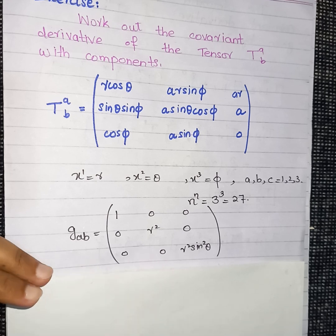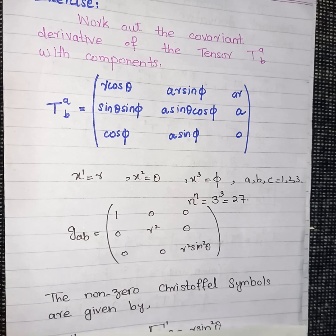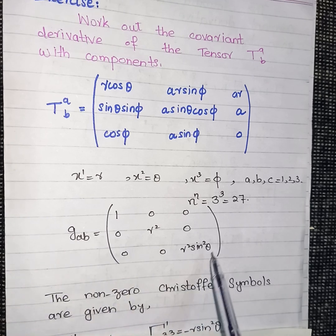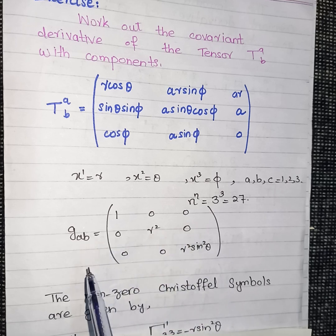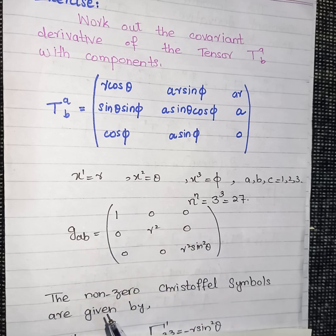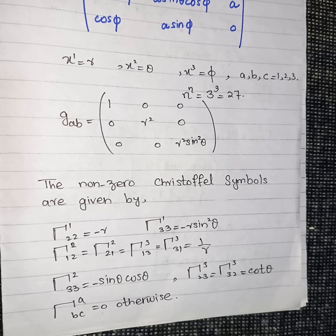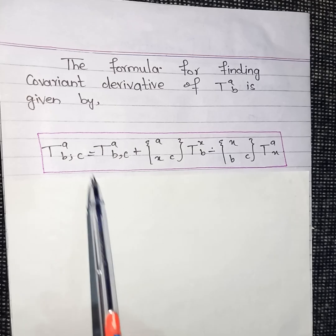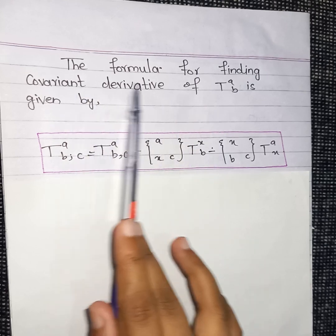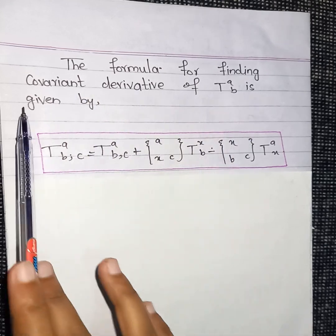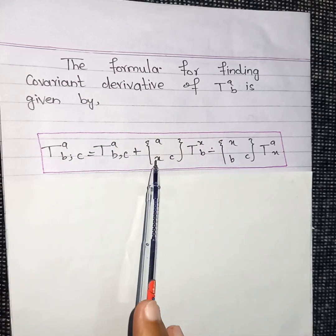The associated metric tensor is given in spherical polar coordinates. The non-zero Christoffel symbols for this metric tensor have already been calculated — I showed how to find them in a previous lecture, so you can check that video. The non-zero Christoffel symbols are as listed here.